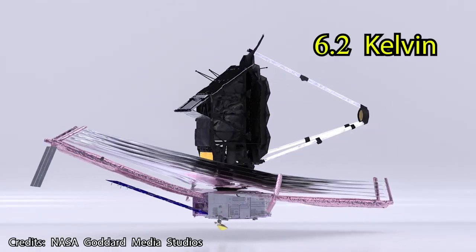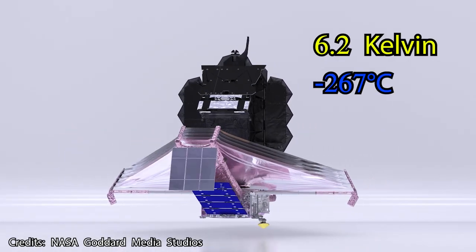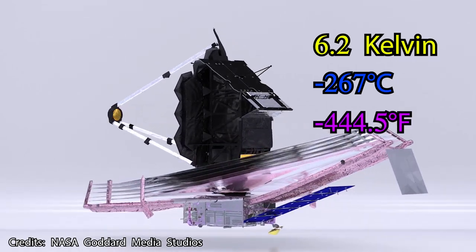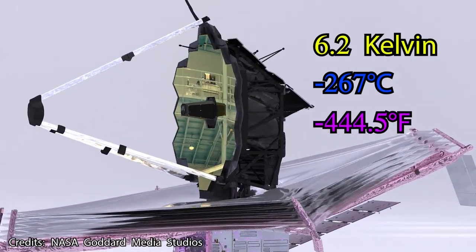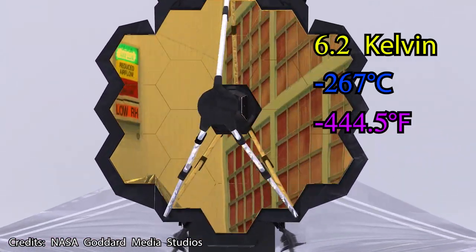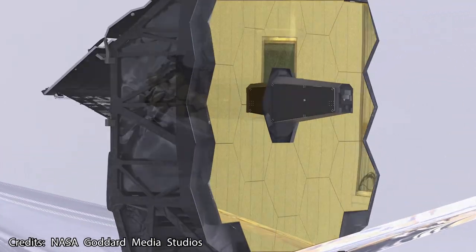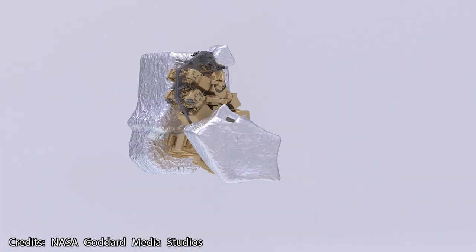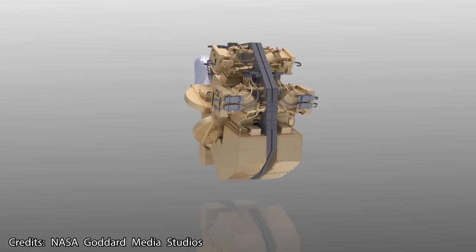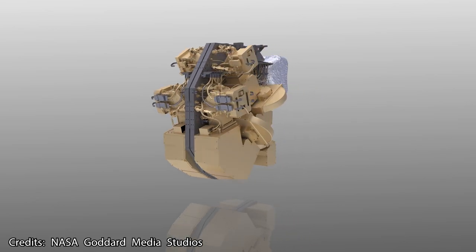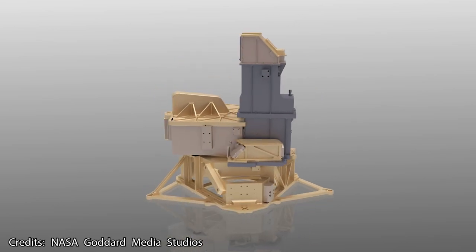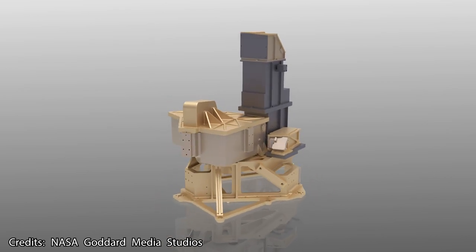6.2 Kelvin, minus 267 degrees Celsius, minus 444.5 degrees Fahrenheit. That's how cold the MIRI instrument aboard the James Webb Space Telescope needs to be to function in an optimal way. However, this is not the case with the other three scientific instruments. They don't need that extreme cold, and in fact, they share a different cooling system that doesn't allow for such low temperatures.